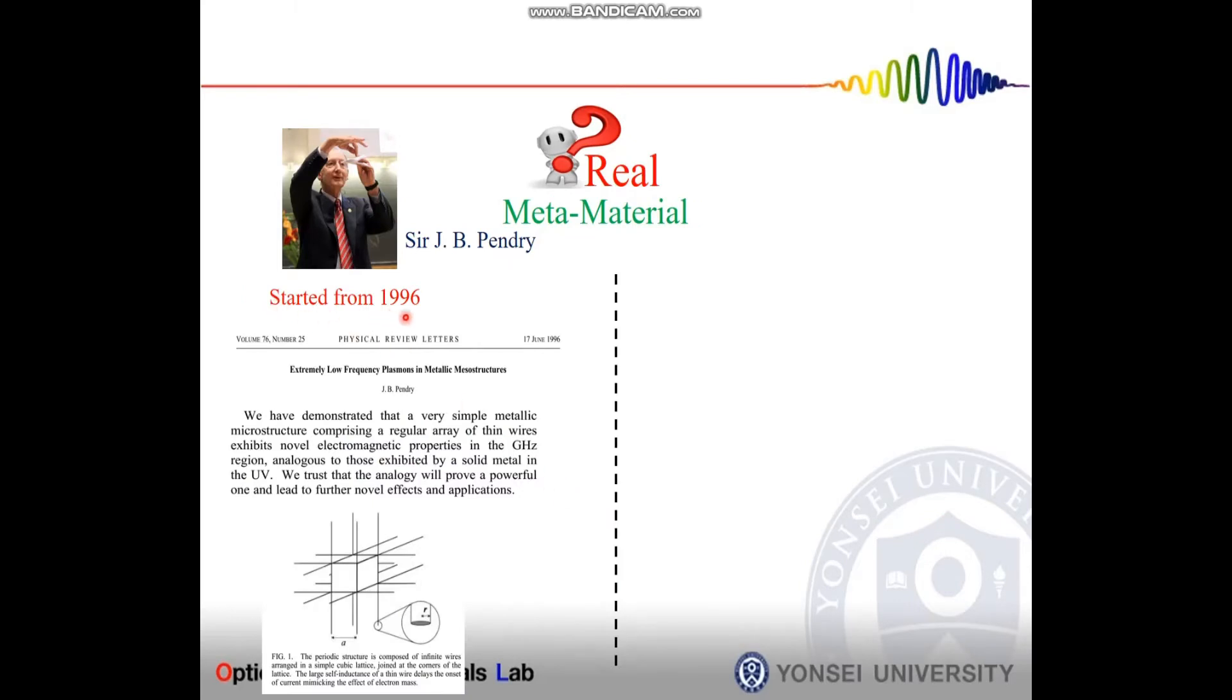In 1996, Sir J.B. Pendray gave an idea of how we can achieve the negative permeability of the material. He proposed a very thin structure of metallic wire which has low frequency stop band and it can be attributed to an effective negative dielectric permittivity.